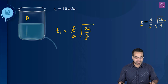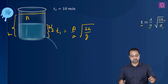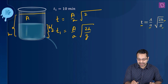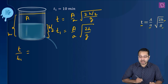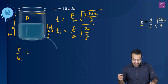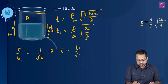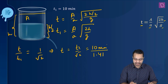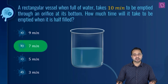For the full tank, t1 = (A/a) × √(2h/g). For the half-filled tank, the height is h/2, so t = (A/a) × √(2 · (h/2)/g). Dividing t by t1, the A/a terms cancel, leaving t/t1 = √(1/2) = 1/√2. Therefore t = t1/√2 = 10/√2 ≈ 10/1.414 ≈ 7 minutes. Option B is the correct option.